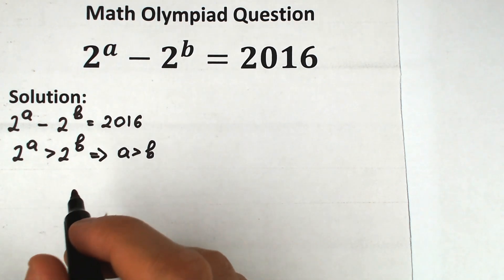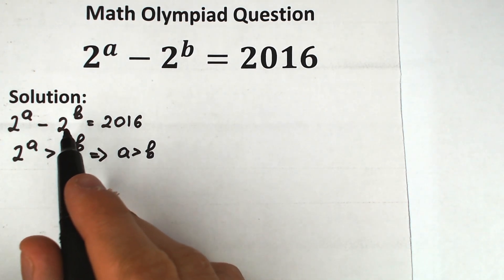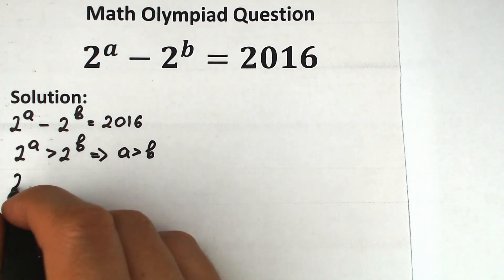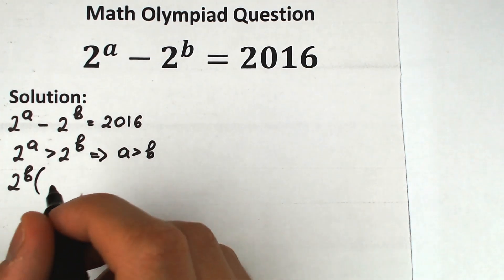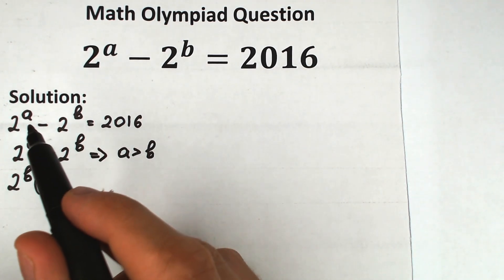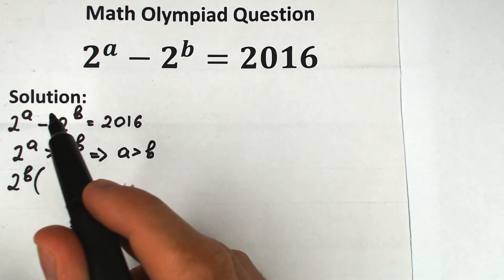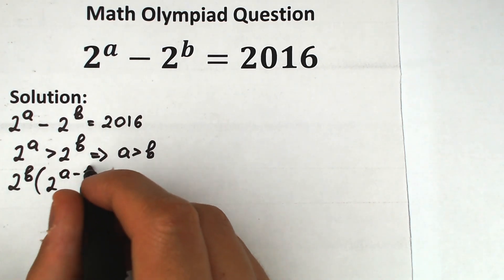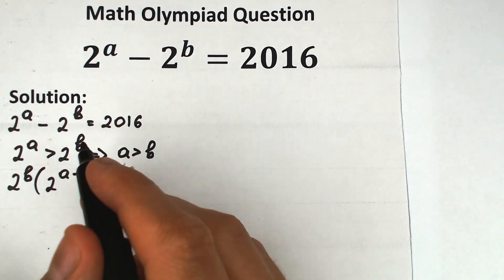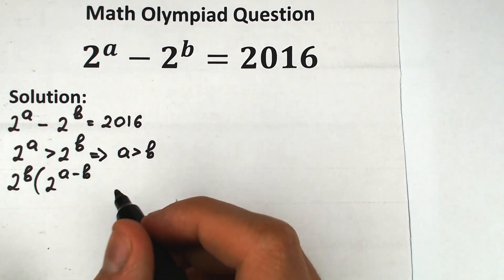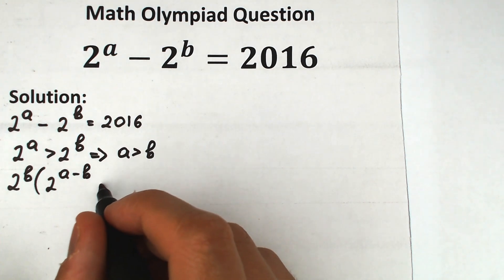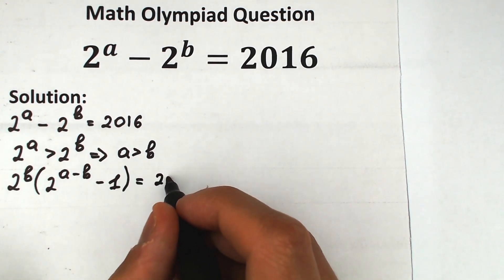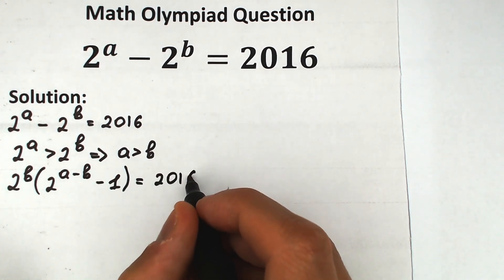Next, let's factor out 2 to the power B. We get 2 to the power B, and in parentheses 2 to the power (A minus B) minus 1, which equals 2016.